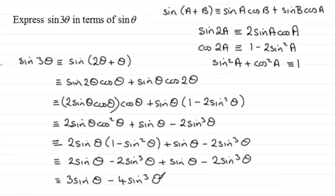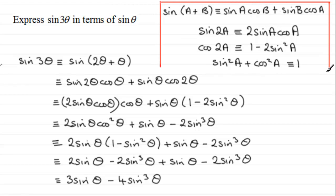So sin(3θ) = 3sin(θ) - 4sin³(θ). That's one way to derive that identity. Make sure you're familiar with all the identities used, and hopefully that gives you an idea of how to approach this type of problem.